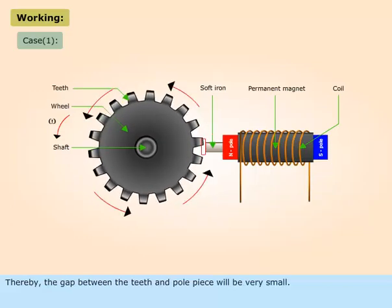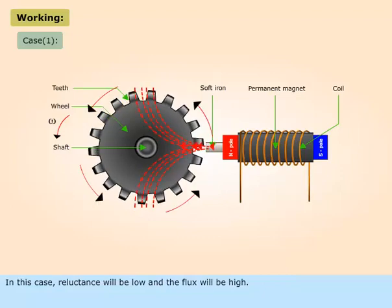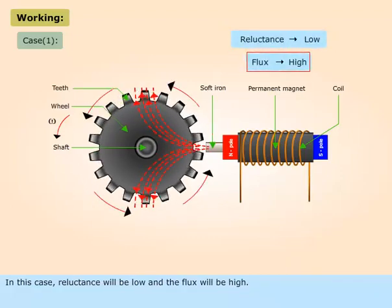Thereby, the gap between the teeth and pole piece will be very small. In this case, reluctance will be low and the flux will be high.